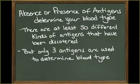The absence or presence of these antigens determines your blood type. These antigens are integral proteins that are embedded in the red blood cell's membrane. There are at least 50 kinds of surface antigens, but three surface antigens are used to determine blood type in the ABO blood typing system.